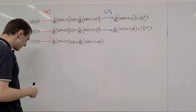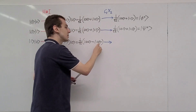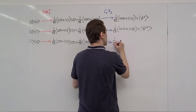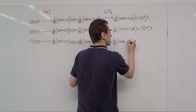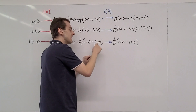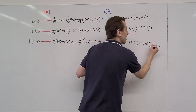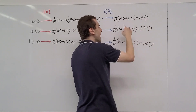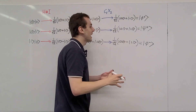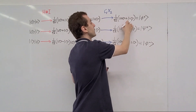Now let's see what the controlled NOT gate does. It leaves the |00⟩ state alone, but the |10⟩ state turns into |11⟩. So we get 1/√2 times (|00⟩ − |11⟩). We can write this as φ−. The only difference between φ− and φ+ is the sign between the terms — this sign can be thought of as a relative phase, since −1 can be expressed as a complex exponential factor.